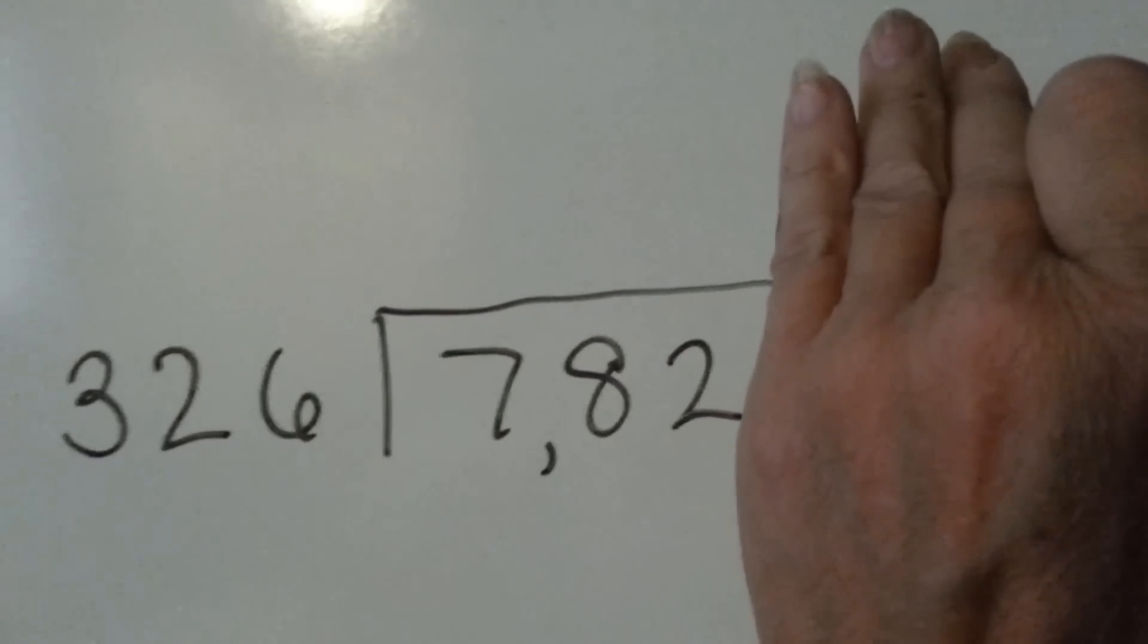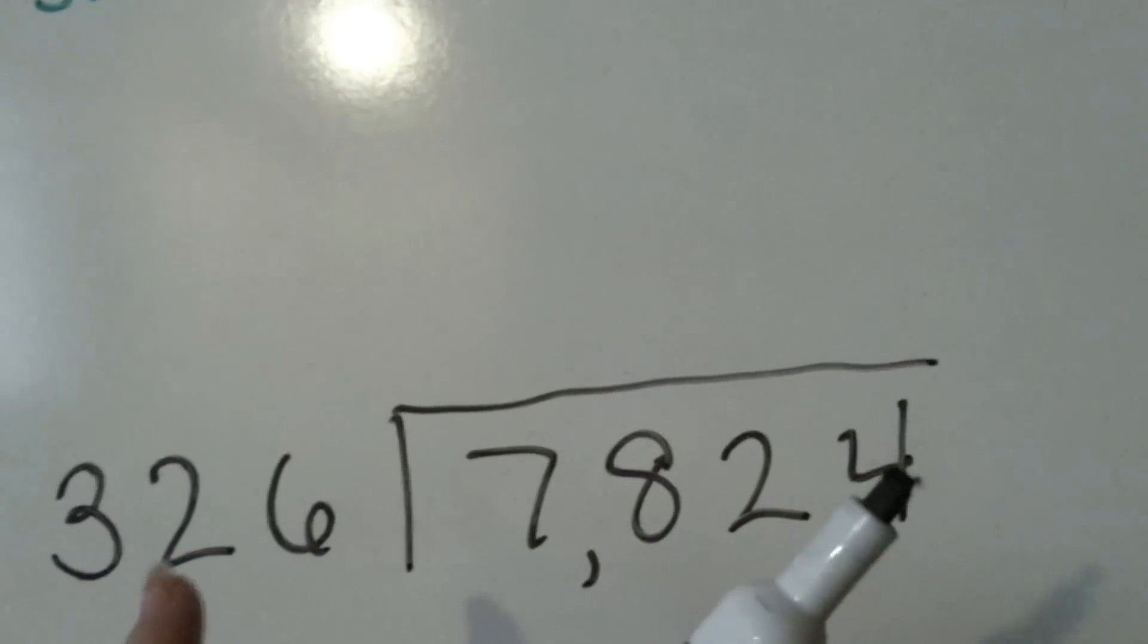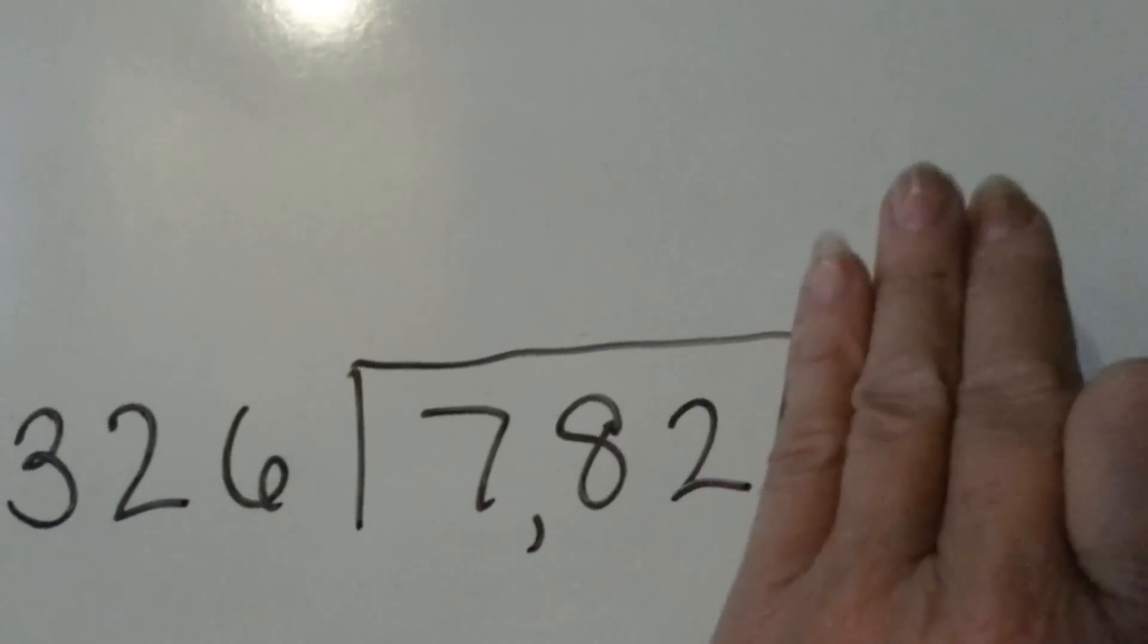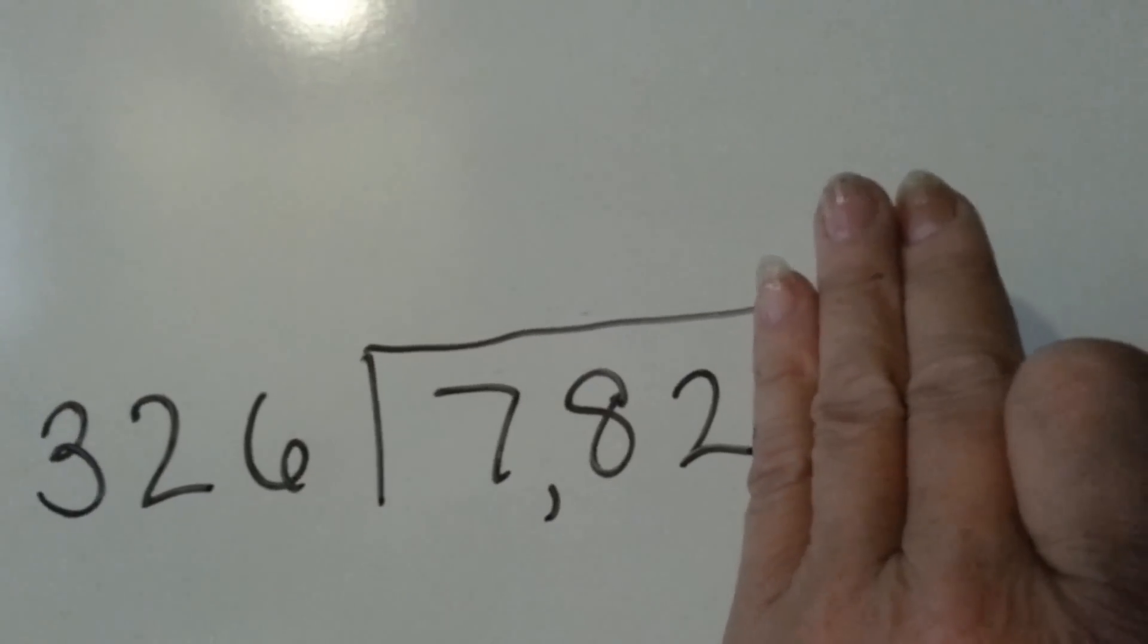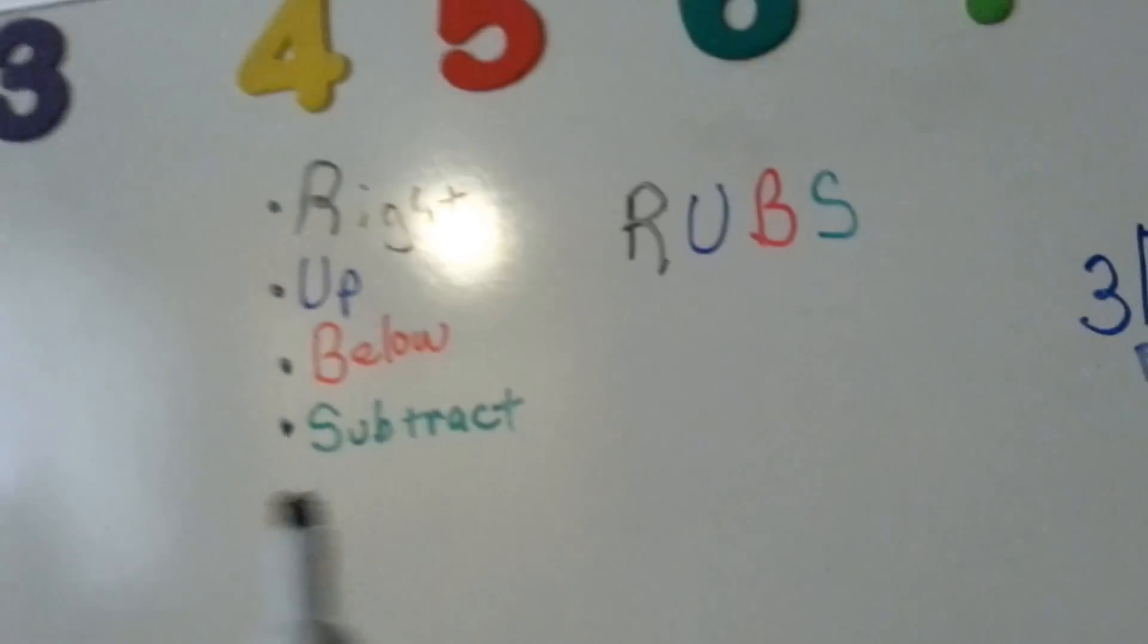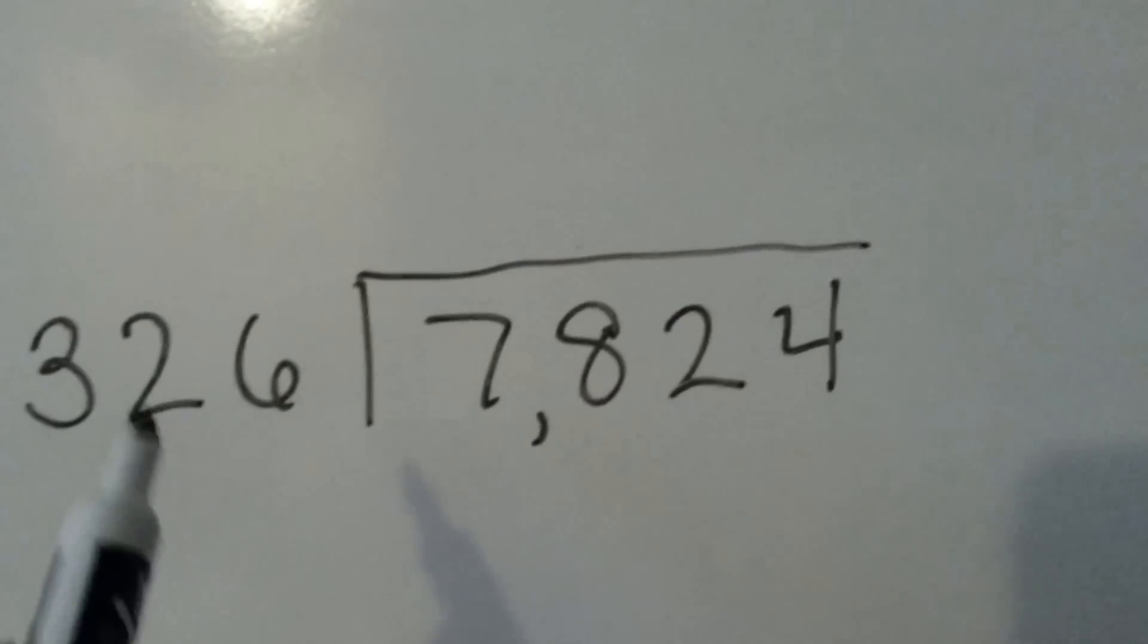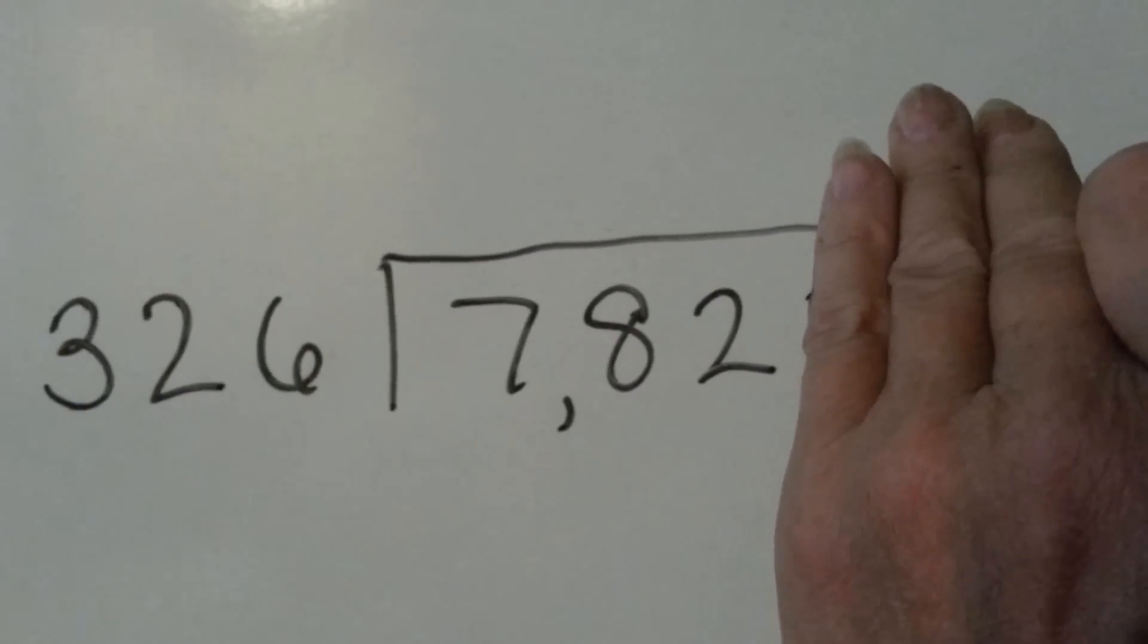How many times though? We're going to write our answer above the two because we go right by asking how many times it goes into it. And then when we have our answer, we write it up. That's the R, that's the U in rubs.